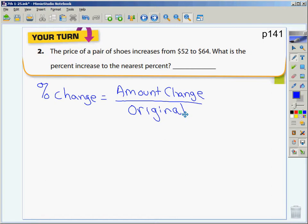In this problem it says the price of a pair of shoes increases from $52 to $64. What is the percent increase to the nearest percent? What is the original amount of the pair of shoes? The original amount is $52. Everybody see that? The original is $52.